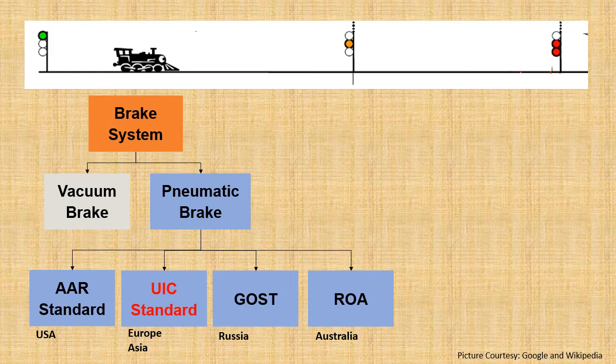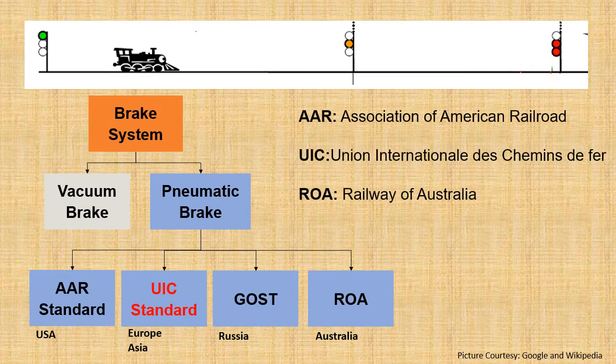The first use of pneumatic brakes happened in 1869 by Mr. George Westinghouse. Following that, every continent set up its own braking standards. The USA follows the AAR standard, which works on graduated application and direct release. The UIC standard is used in Europe, Asia, India, and many more parts of the world, following graduated application and graduated release. The Gauss system is used in Russia, and the ROA — Railways of Australia — uses a specification mixing AAR and UIC, used exclusively for Australian railways.